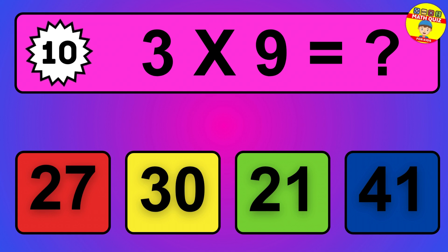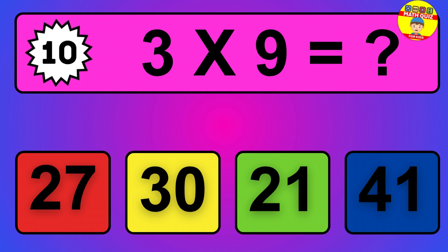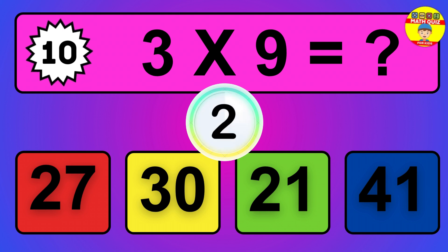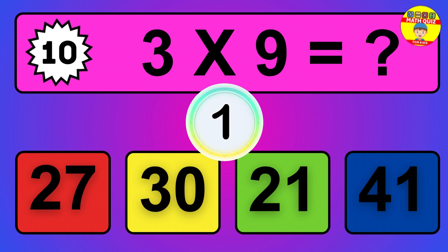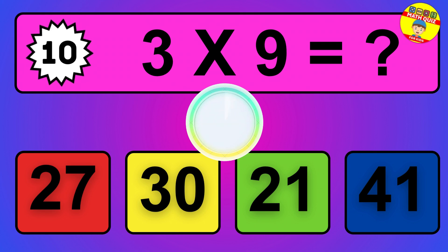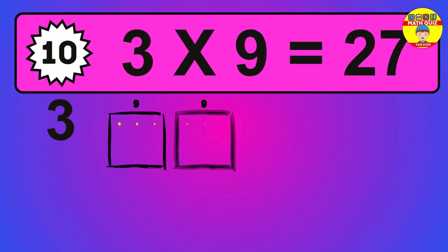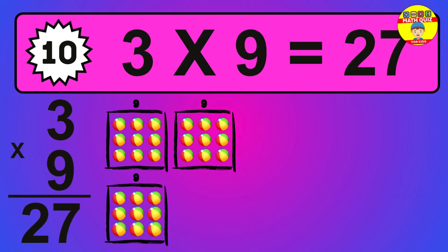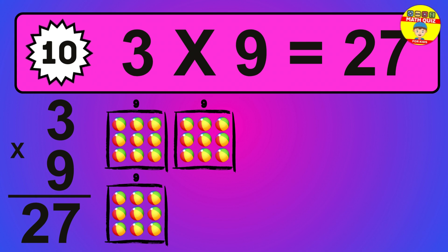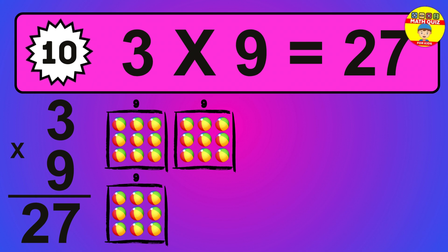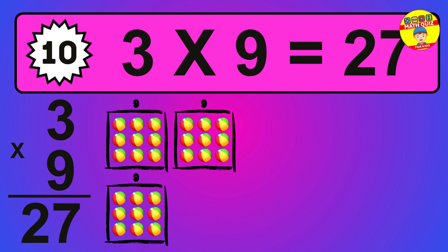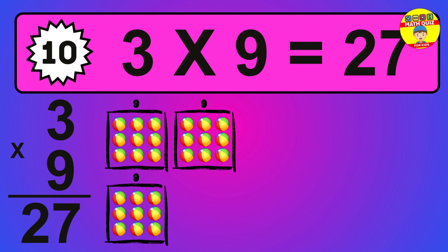Question 10. 3 times 9 equals what? So the answer is 3 times 9 is 27. To calculate, we have 3 groups with 9 balls each one. So how many balls do we have? 27 balls.